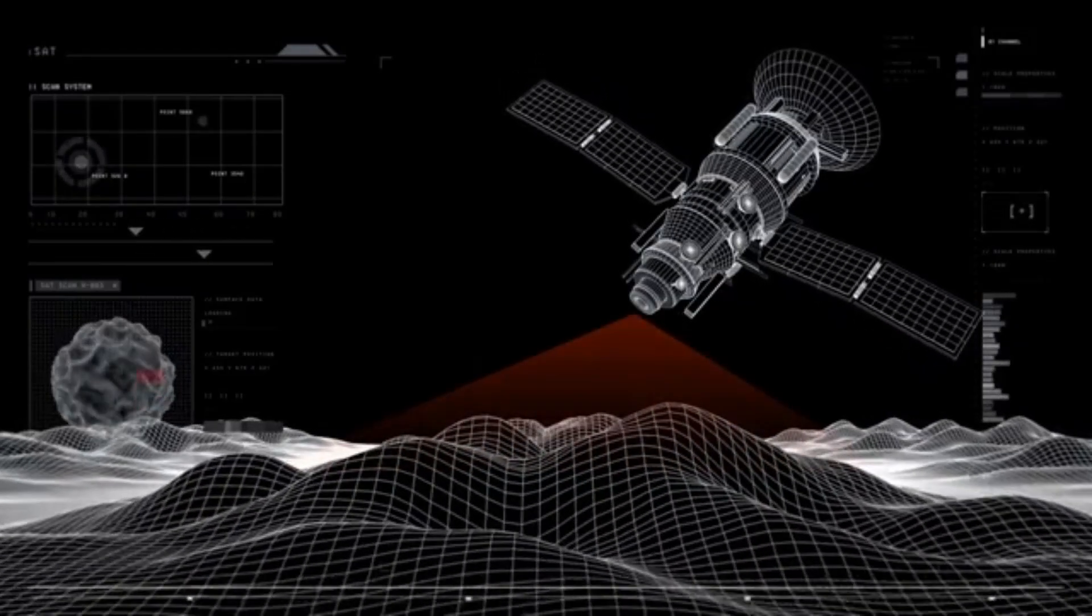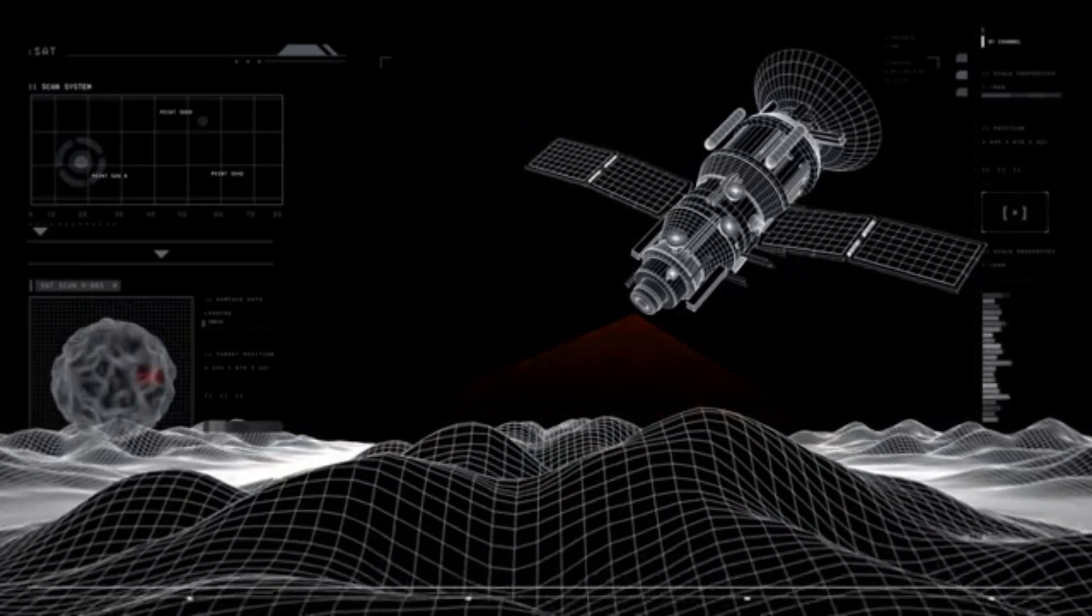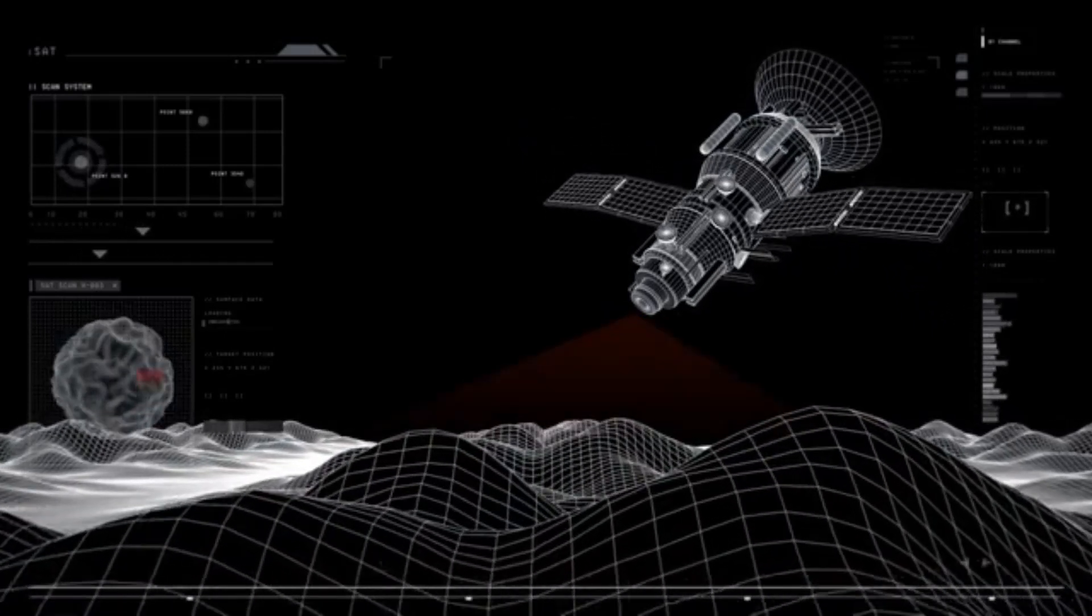NASA says the data will guide future missions, like the Interstellar Mapping and Acceleration Probe, or IMAP, which will map the heliosphere in greater detail in the coming years.